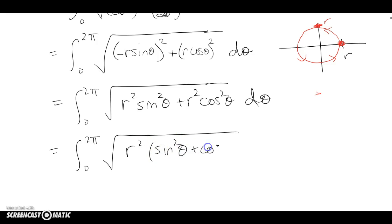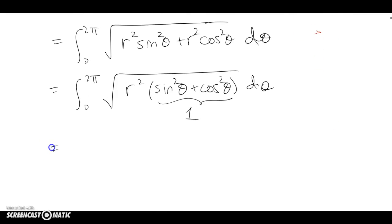And when I do that, conveniently it looks like I get a 1 for this guy. That's going to give me the integral from 0 to 2π. Square root of r squared is just r because I'm thinking of the radius of the circle r being a positive number, r dθ.